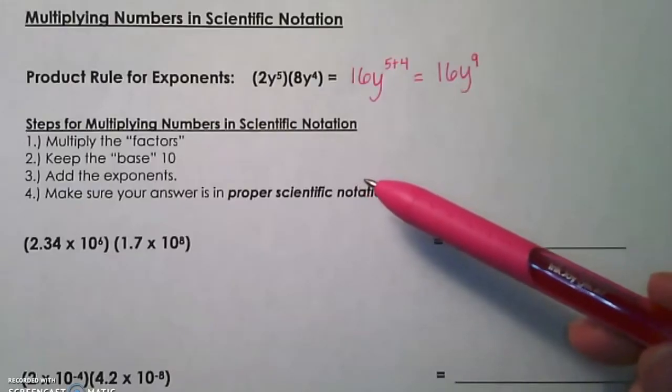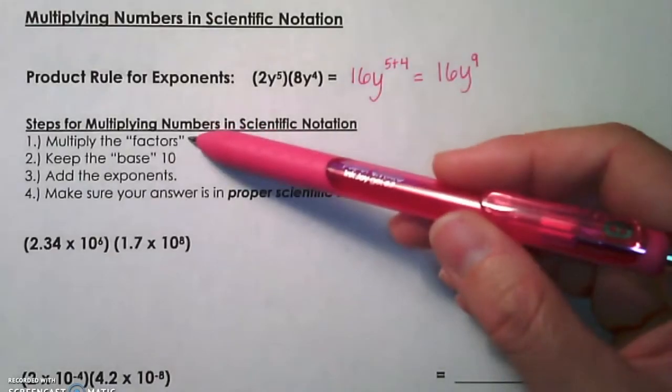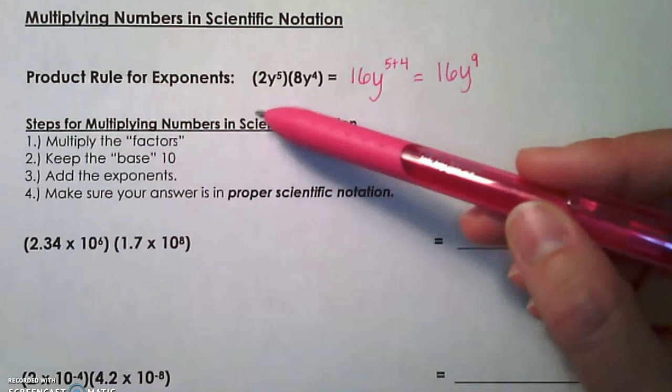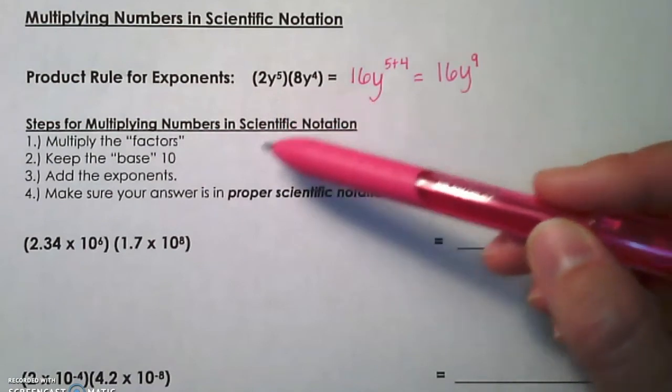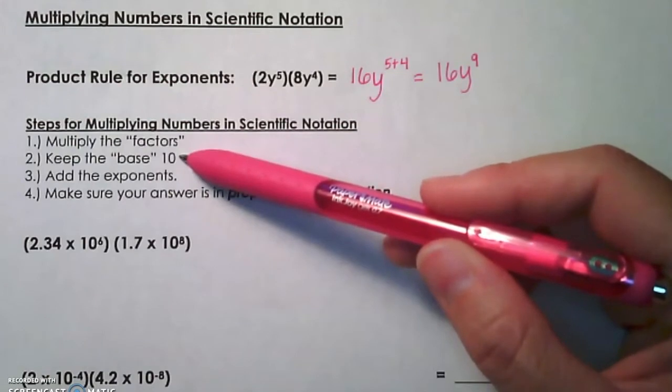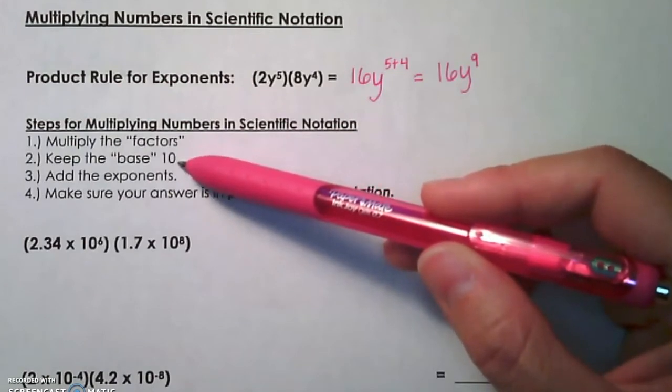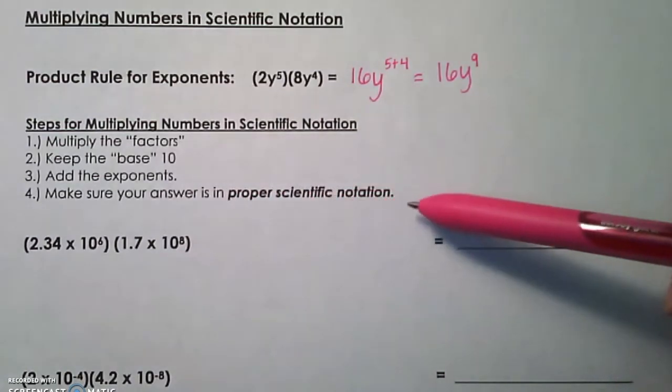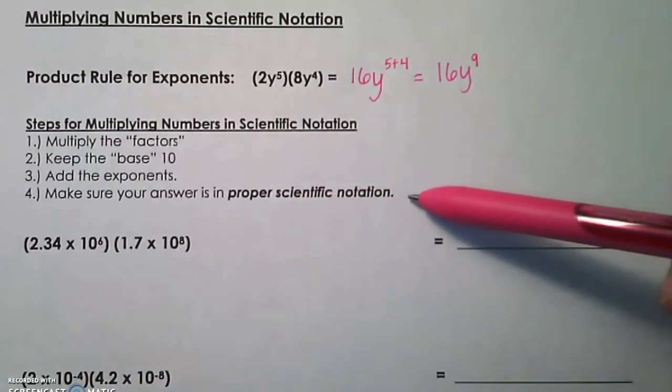When we're multiplying two numbers in scientific notation, we're going to multiply the factors. Those factors are the numbers that you're multiplying by the power of 10. So in this example, the 2 and the 8 would be the factors. We multiply those numbers, keep our base 10, and our 10s have exponents on them, and then you add those exponents. The final step is to make sure that your answer is in proper scientific notation, and we'll talk about that in a couple of the last examples.